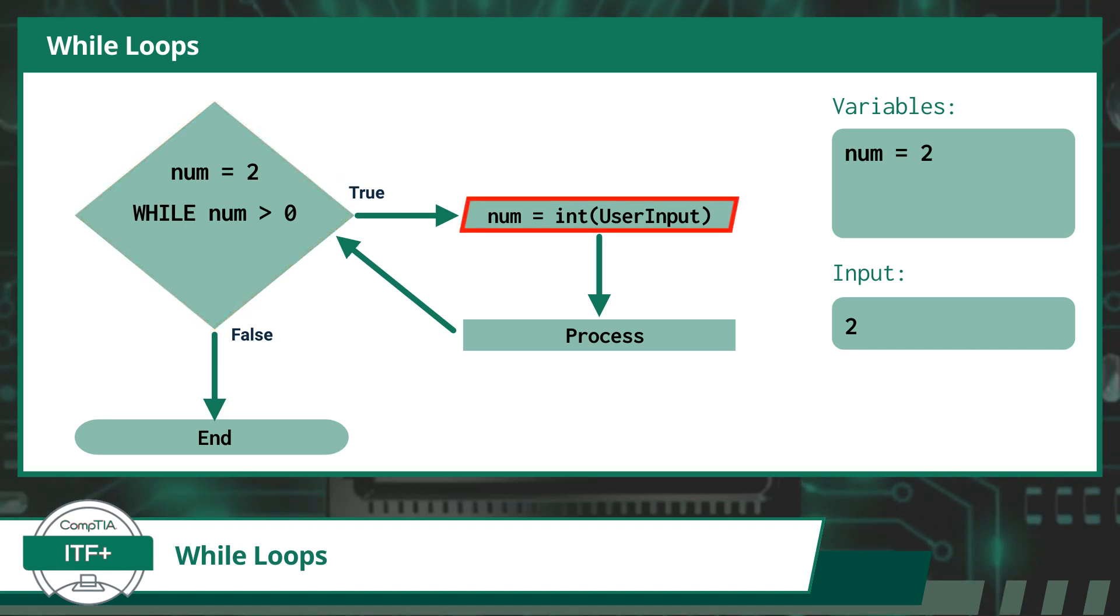So again, we will receive an integer from a user that will be assigned to the num variable and replace our current value. This time we will assume the value minus 1 was provided as an input. Here our program will perform some type of process, and then we will return back to the condition check of the while loop. At this point, we have completed the while loop twice.